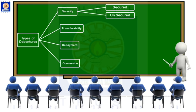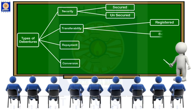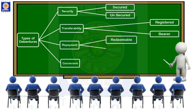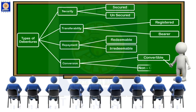The first category is on the basis of security. Second, on the basis of transfer. Third, on the basis of repayment, that is redemption. And the last is on the basis of conversion. The last two categories are similar to the types of preference shares.